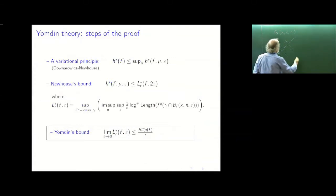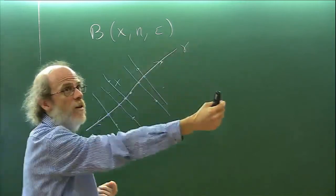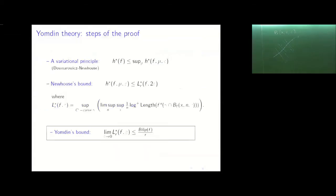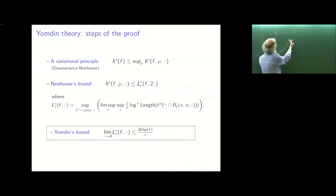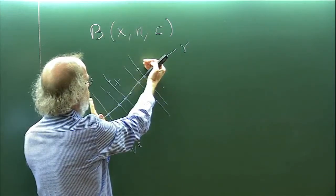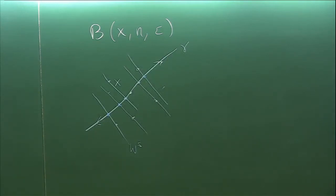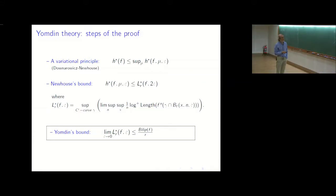Now we want to see how points separate inside a curve. This can be bounded by measuring how the length of that curve grows when we iterate. The key quantity is the supremum over C^r curves of the growth of the length of the iterate — but importantly we are only interested in the part of the curve that covers the set, i.e., the part that remains in the dynamical ball. The last step is to bound this quantity by the Lipschitz norm of f over r — this is Yomdin's bound.